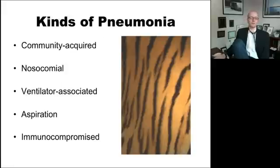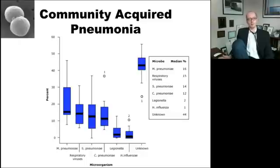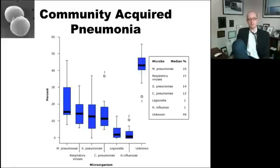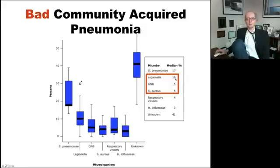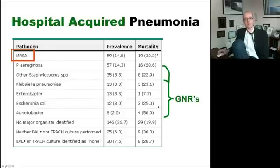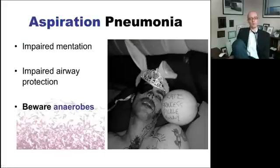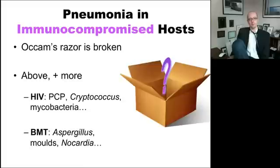Once you've made the diagnosis of pneumonia, it's very important to say what stripe of pneumonia this is: community-acquired, nosocomial or healthcare-associated, ventilator-associated, aspiration, or is this somebody who's immunocompromised and all bets are off? This matters because the bugs that cause each type are different. In community-acquired pneumonia about half the time we don't even know the cause, but atypicals like mycoplasma, chlamydophilia, and legionella, or strep pneumo and viruses are the problem. In severe community-acquired pneumonia, staph aureus becomes a player and atypicals fall off the list. In hospital-acquired pneumonia you worry about MRSA and gram-negative rods — no atypicals. In aspiration pneumonia you worry about anaerobes. Immunocompromised patients are a separate entity beyond the scope of this course.